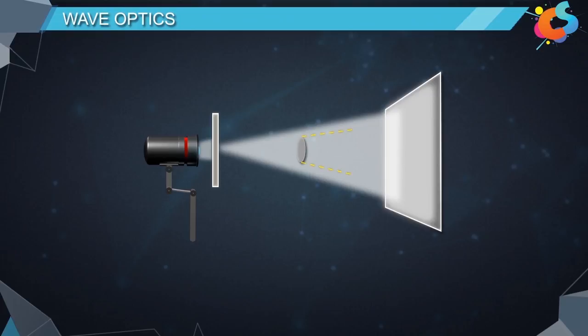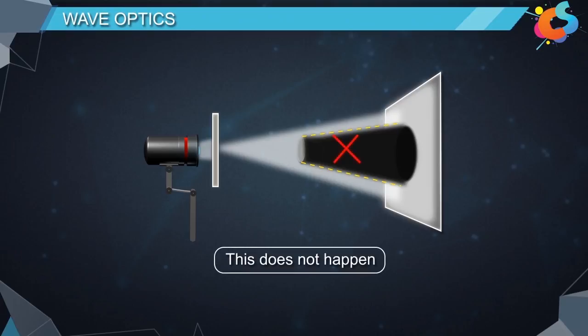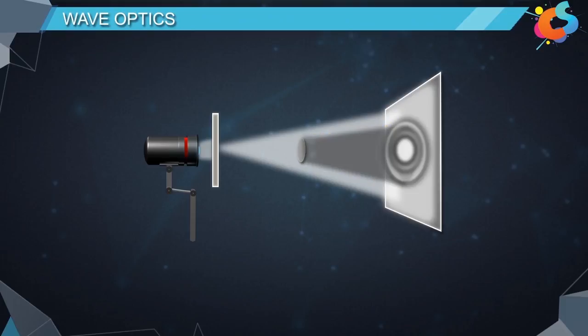If the light travels in a straight line, then we should see a dark circular spot on the screen. However, this does not happen. In fact, we get a bright spot in this place. This can only happen if the light bends at this point and reaches this spot.